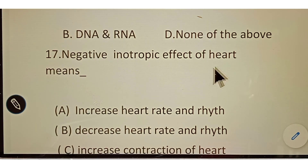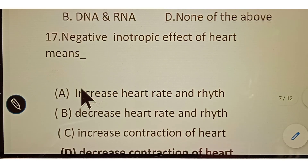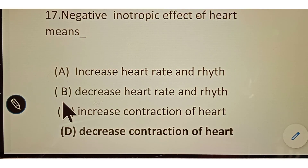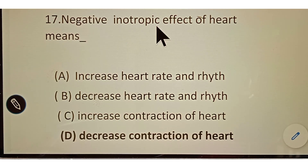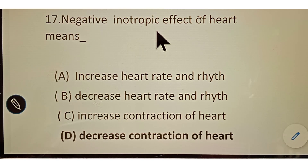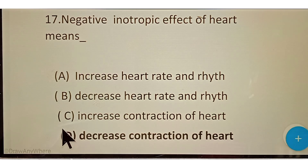Question number seventeen: negative inotropic effect of the heart means? Options given: A. Increased heart rate and rhythm, B. Decreased heart rate and rhythm, C. Increased contraction of heart, D. Decreased contraction of heart. There are two types of effects: inotropic and chronotropic. Inotropic effect is related to the contraction of the heart, while chronotropic effect is related to heart rate and rhythm. The correct answer is option D, decreased contraction of heart.